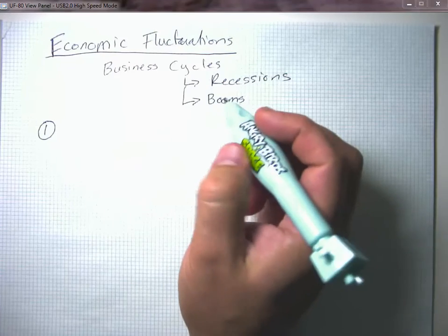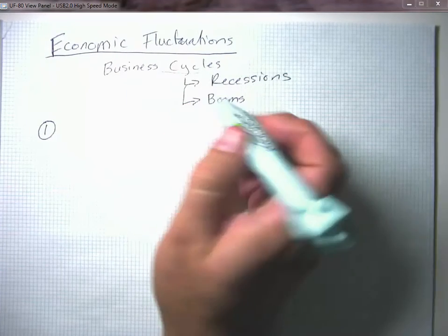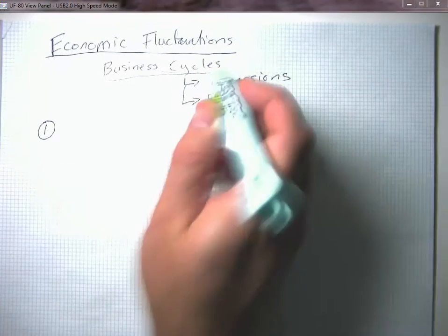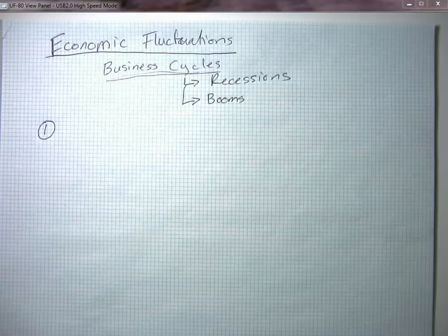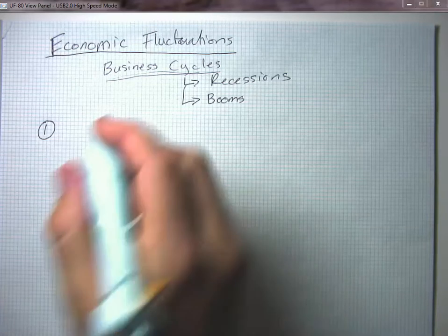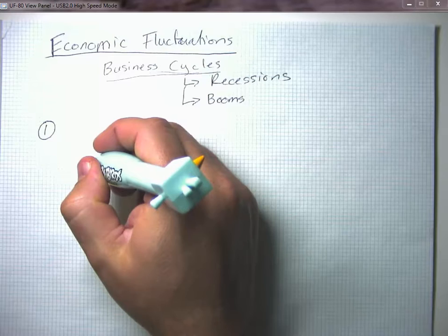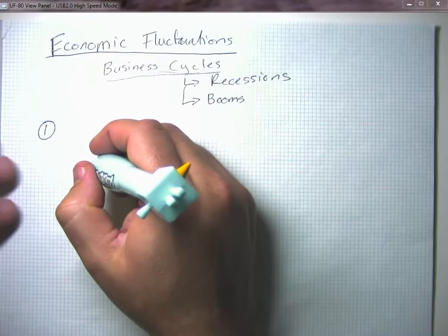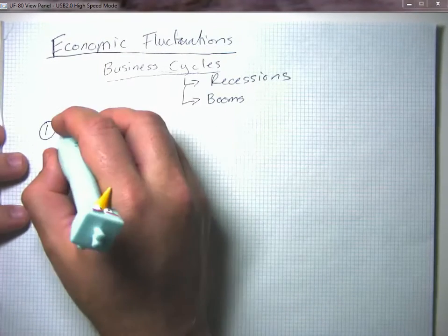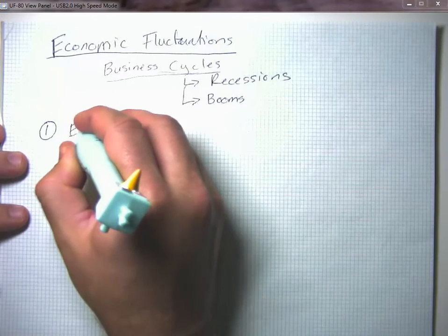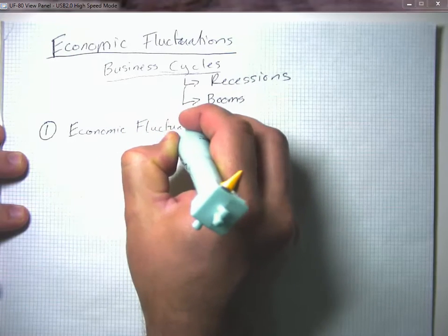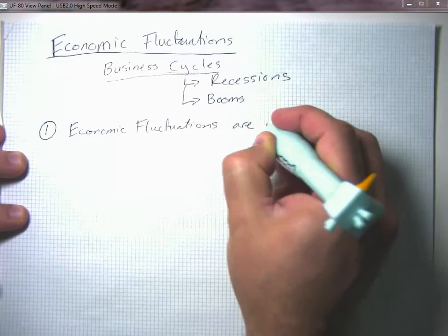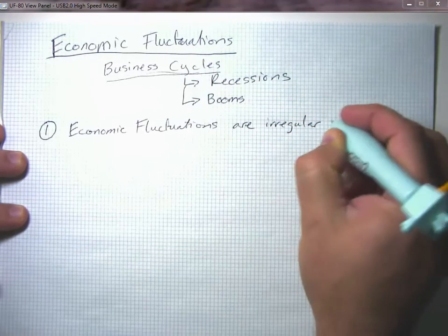The first stylized fact: we used to call them business cycles, but the word 'cycle' probably implies a higher level of predictability and regularity than is appropriate. The cycle of seasons or election cycles come on a very regular basis, but economic fluctuations are irregular and unpredictable.